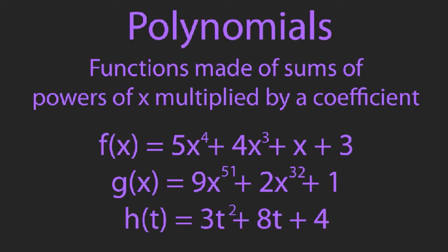Let's talk about polynomials. Polynomials are functions made of sums of powers of X multiplied by a coefficient. Here are three examples — each term has a power of X like X to the third, multiplied by a constant coefficient like 4, and you add all those together. This last one uses T instead of X, but that's fine — you can use any parameter you want.